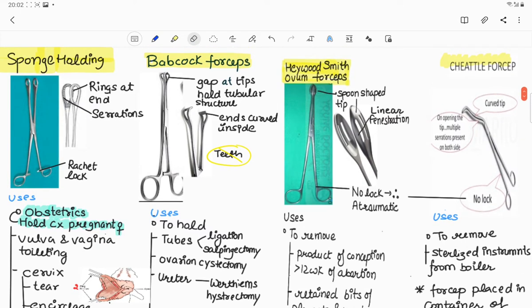Fifth forceps is sponge holding forceps. On opening the forceps we can see it contains rings at the end with transverse serrations and a ratchet lock.